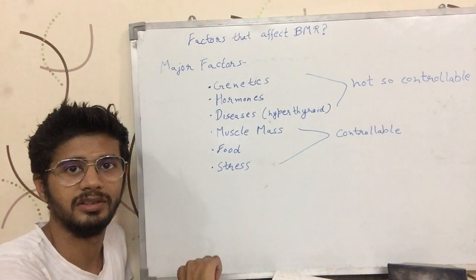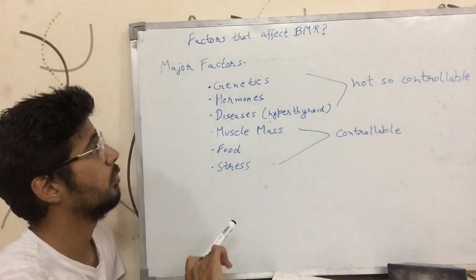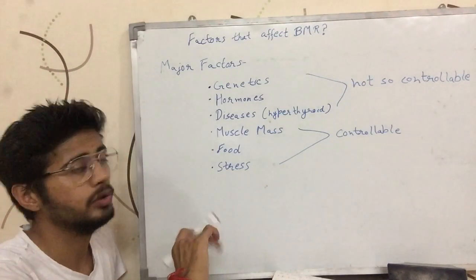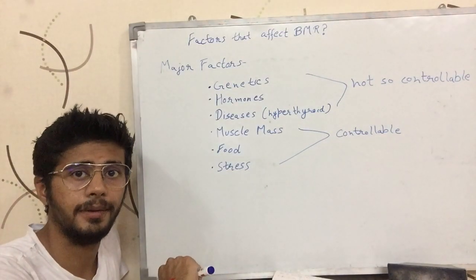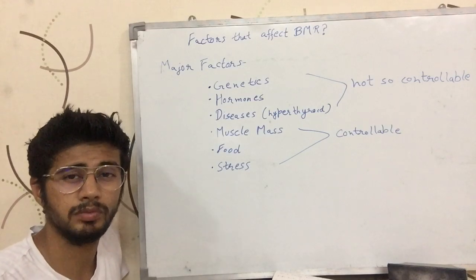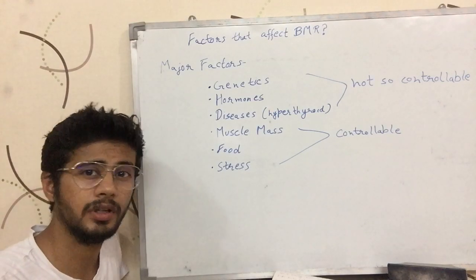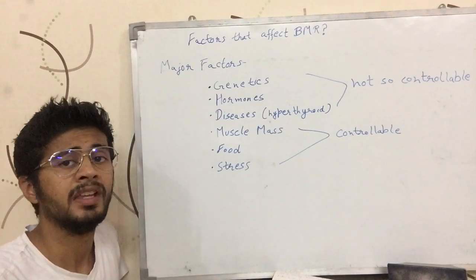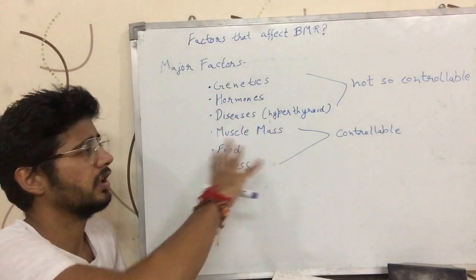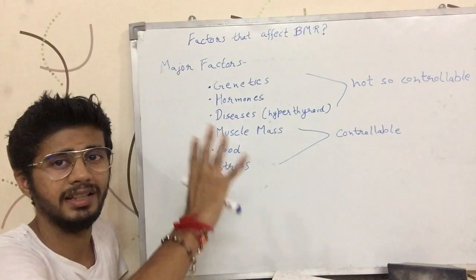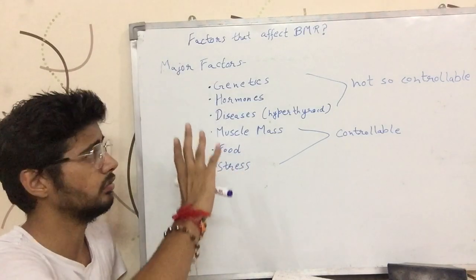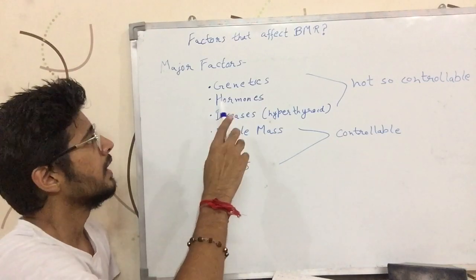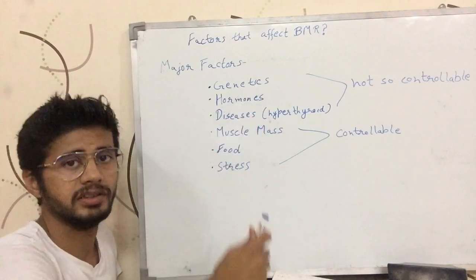Hi guys, this is Vishant Kuchar and today we are going to talk about what are the factors that affect your BMR. I'm going to be talking about major factors — not things like how drinking alcohol or smoking affects your BMR. We are going to be talking about a healthy, general layman who's trying to think about his health and is not drinking or smoking. So the first factor would be genetics — your heredity of genes — they affect your BMR.